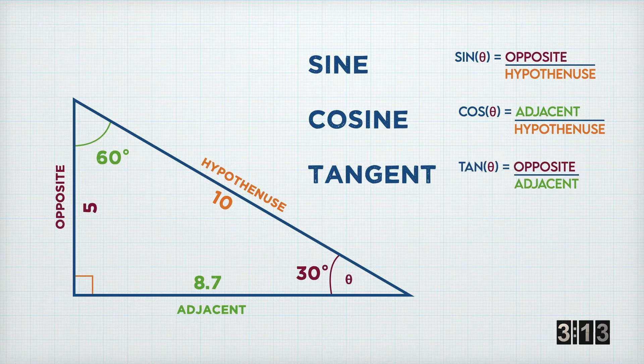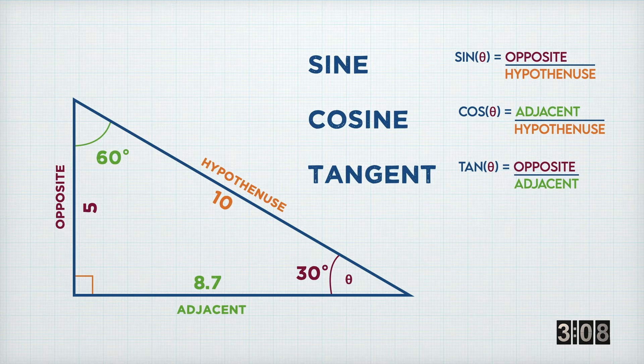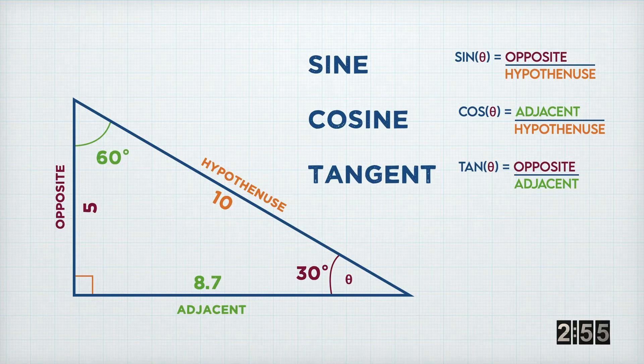The third function is tangent, and the tan of our angle is equal to the length of the opposite divided by the length of the adjacent. So in this case, 5 divided by 8.7 is 0.57. And if you do the tan of 30, you'll get 0.57.